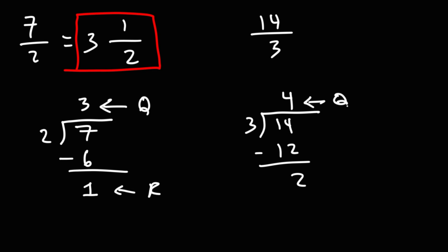So we have a quotient of 4, a remainder of 2. So first the denominator will be the same. The quotient is 4, that's going to go out in front. That's the whole number. And the remainder is 2. So 14 over 3 as a mixed number is 4 and 2 thirds.